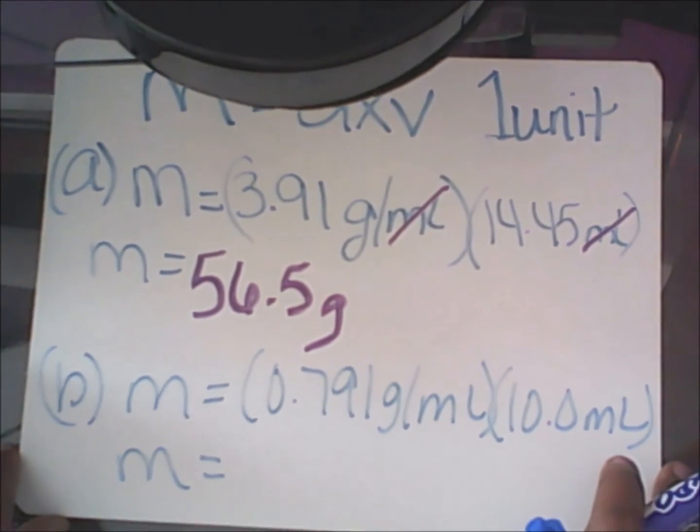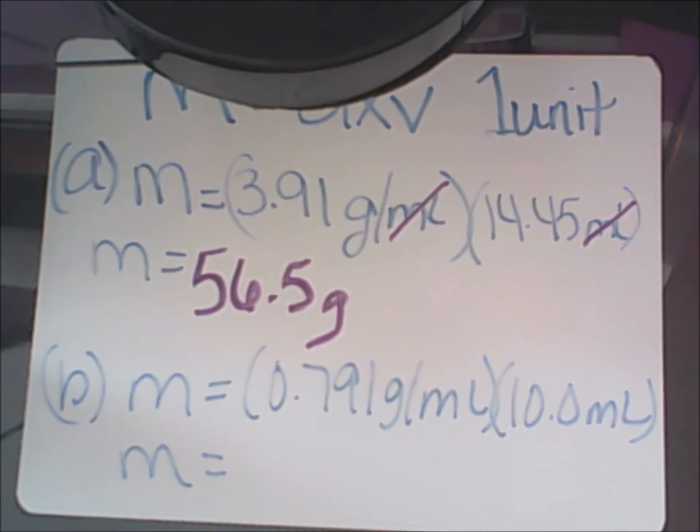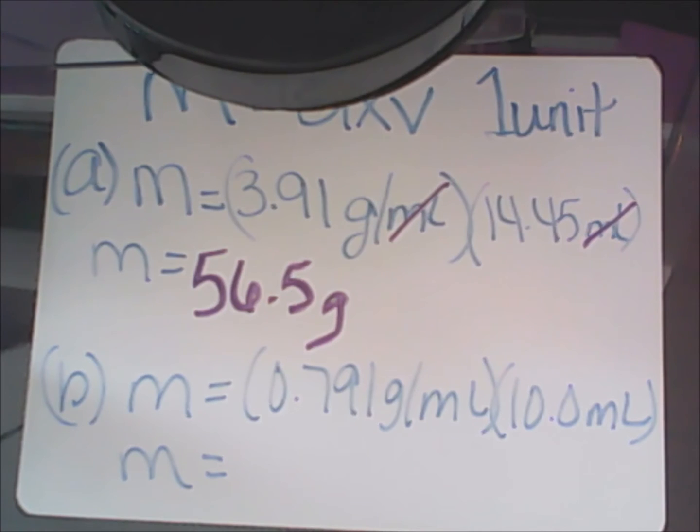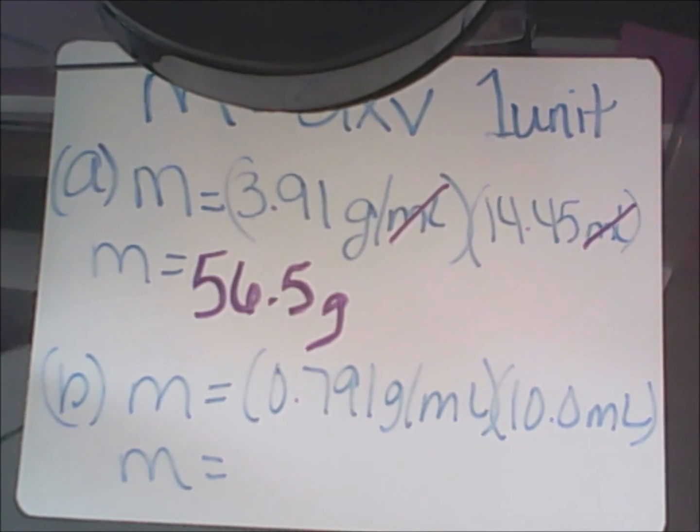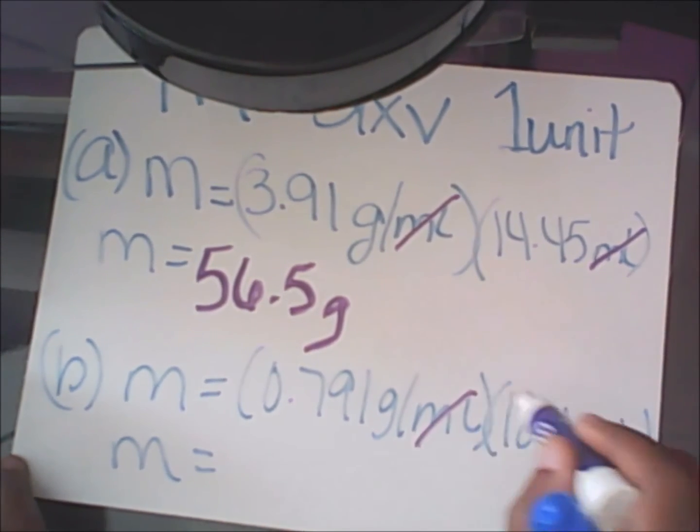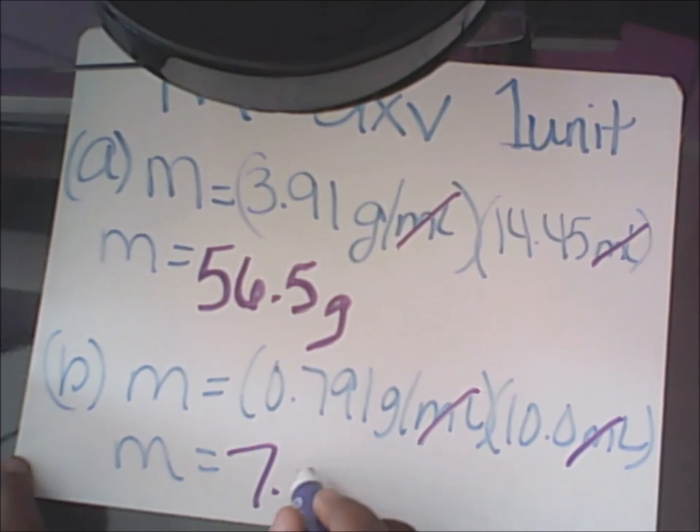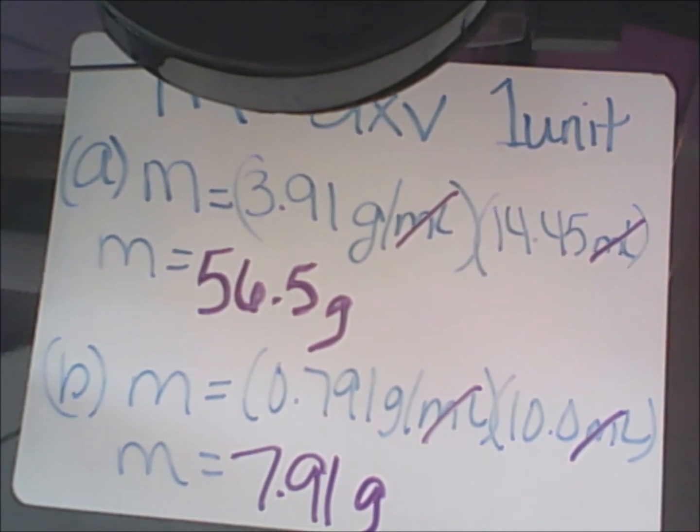In the last example, I have three significant digits and in the last number here for the milliliters I have three also. What I'm going to do is multiply those two numbers together, again canceling out my like terms which are the milliliters, and I'm left with 7.91 grams as my final answer.